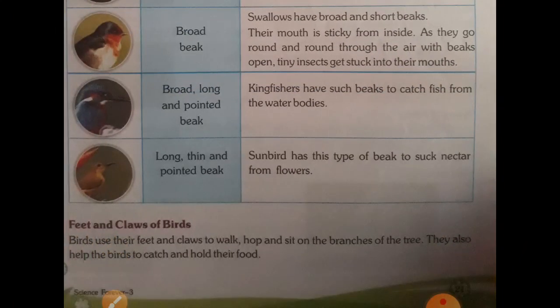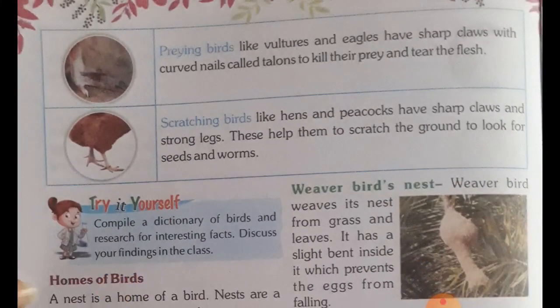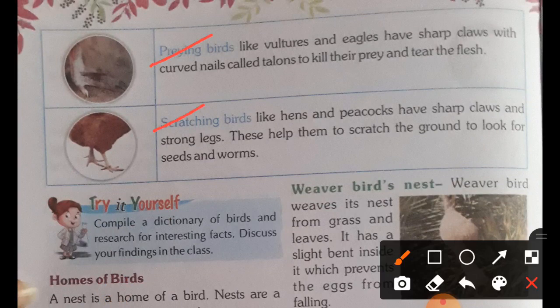Feet and claws of birds: birds use their feet and claws to walk, hop, and sit on branches of trees. They also help the birds to catch and hold their food. There are two types — preying birds and scratching birds. Preying birds like eagles have sharp claws with curved nails called talons to kill their prey and tear flesh. Scratching birds like hen and peacock have sharp claws and strong legs to scratch the ground to look for seeds and grubs.